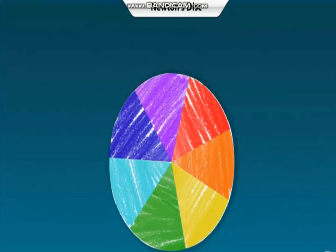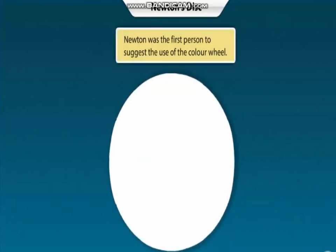Now spin the disc. The disc will appear white in color. Remember that the disc just appears to be white; it does not really reflect back white light.